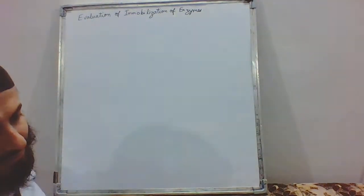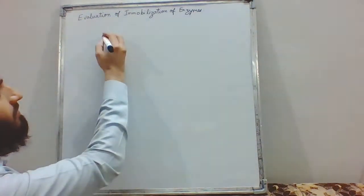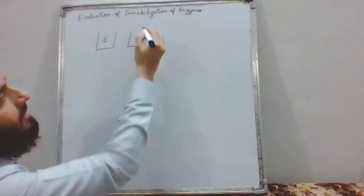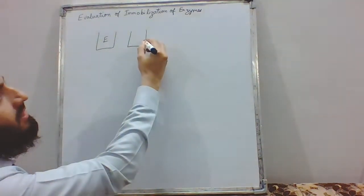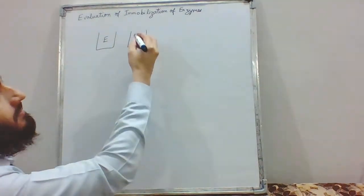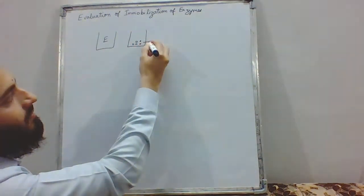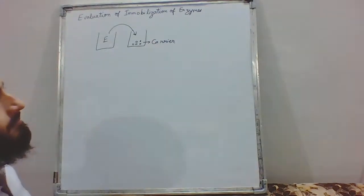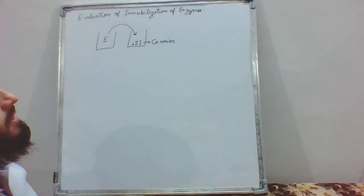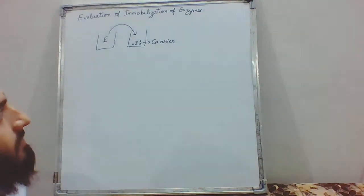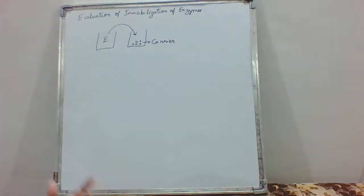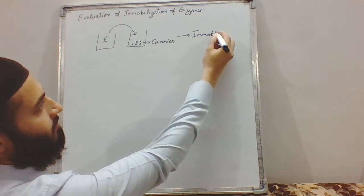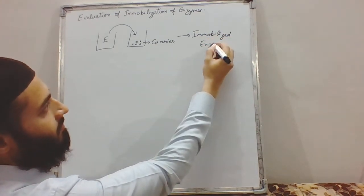We must know what we have done in the immobilization process. In the immobilization process we had a solution of enzymes. Based upon the method of immobilization, we had the concerned support or the concerned medium in which we will be immobilizing. This is our carrier in which we are going to immobilize the enzyme. We will be contacting the enzyme with our carrier. After certain incubation, we will get our immobilized enzymes.